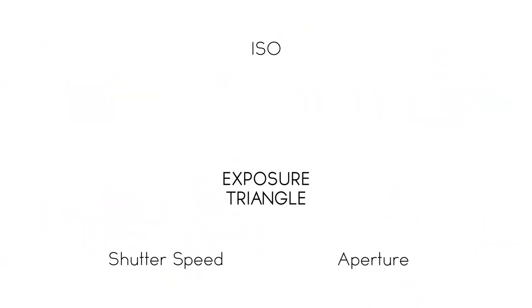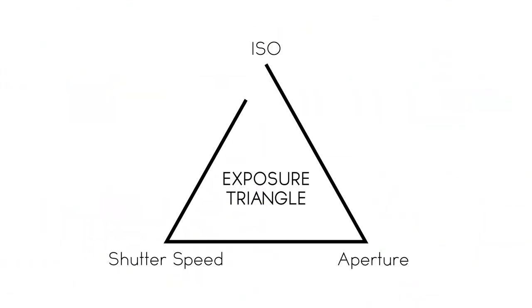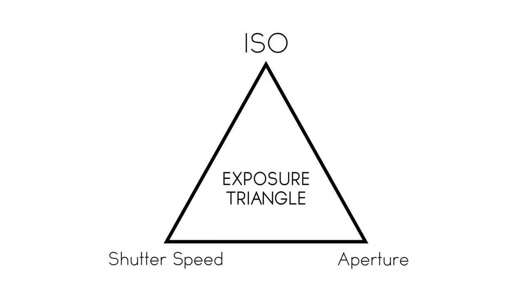Without further ado, there's your exposure triangle right there. There are three basic functions that your camera uses to properly expose an image. Those three settings are shutter speed, aperture, and your ISO. So let's dive into each one of those individually.